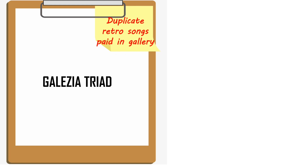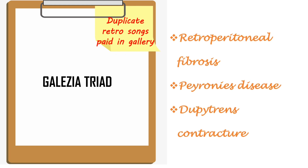Duplicate is Dupuytren's contracture, retro is retroperitoneal fibrosis, paid is Peyronie's disease, and gallery is Galeazzi triad.